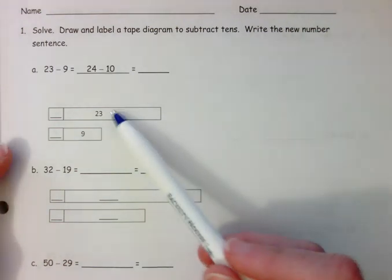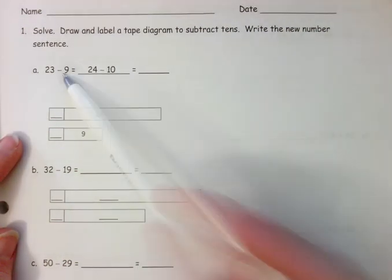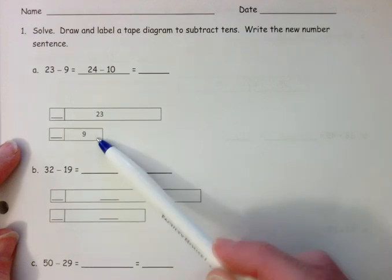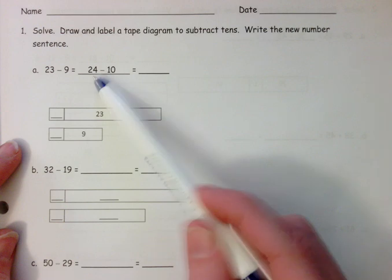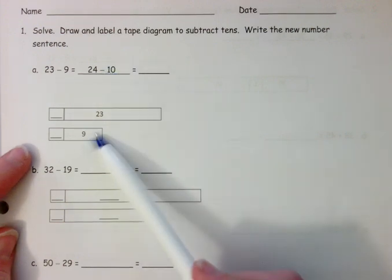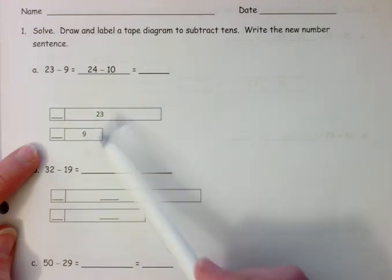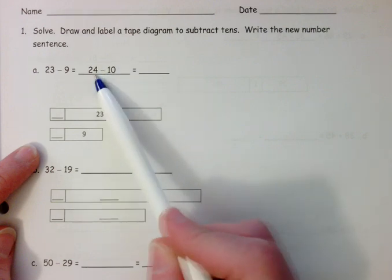So students would see that 23 minus 9, shown here in this double tape diagram, is similar to 24 minus 10. What do we need to do to each number to make it become 24 minus 10?